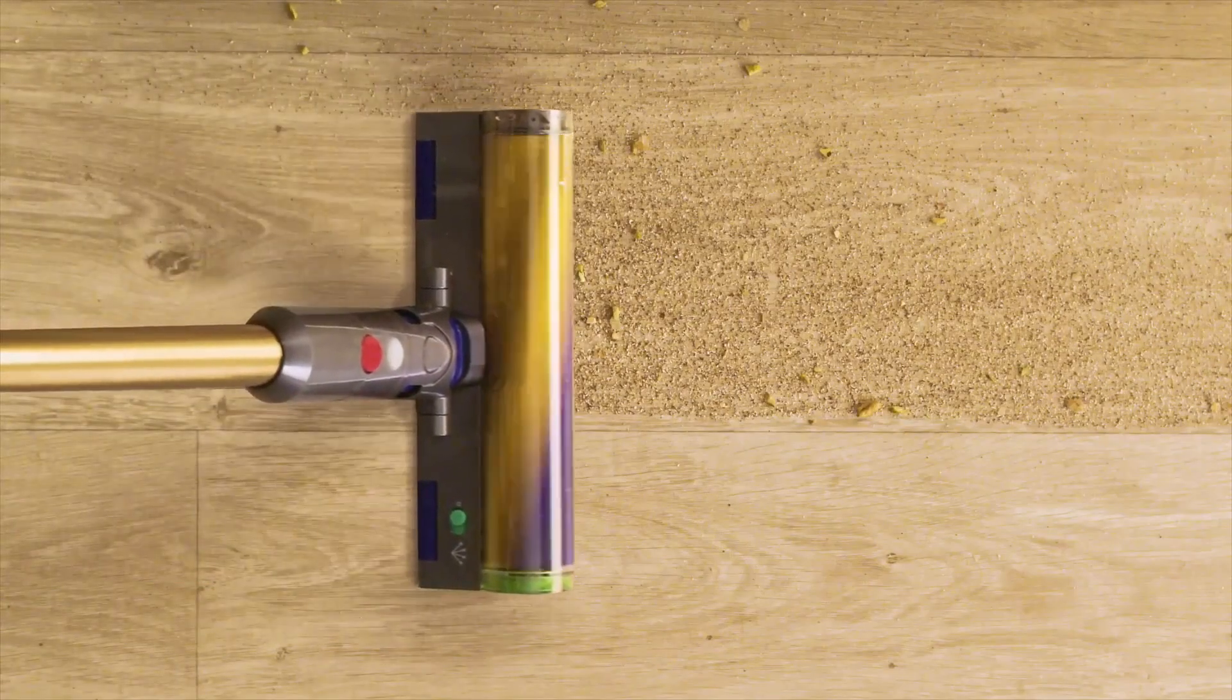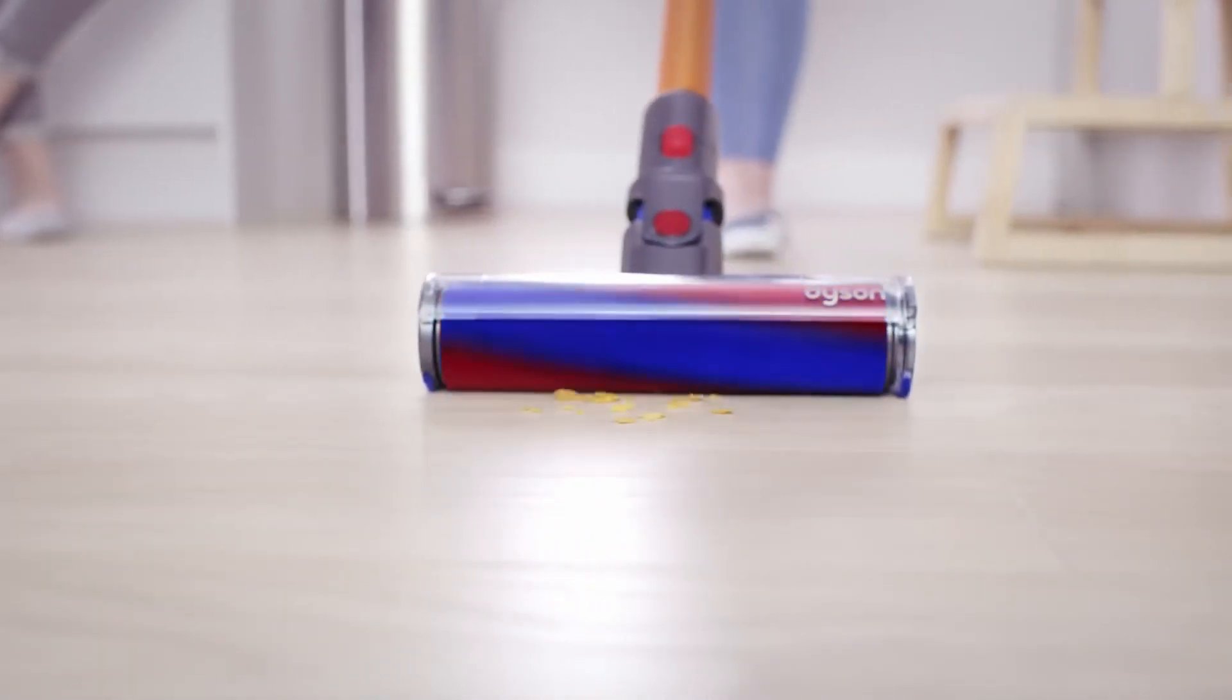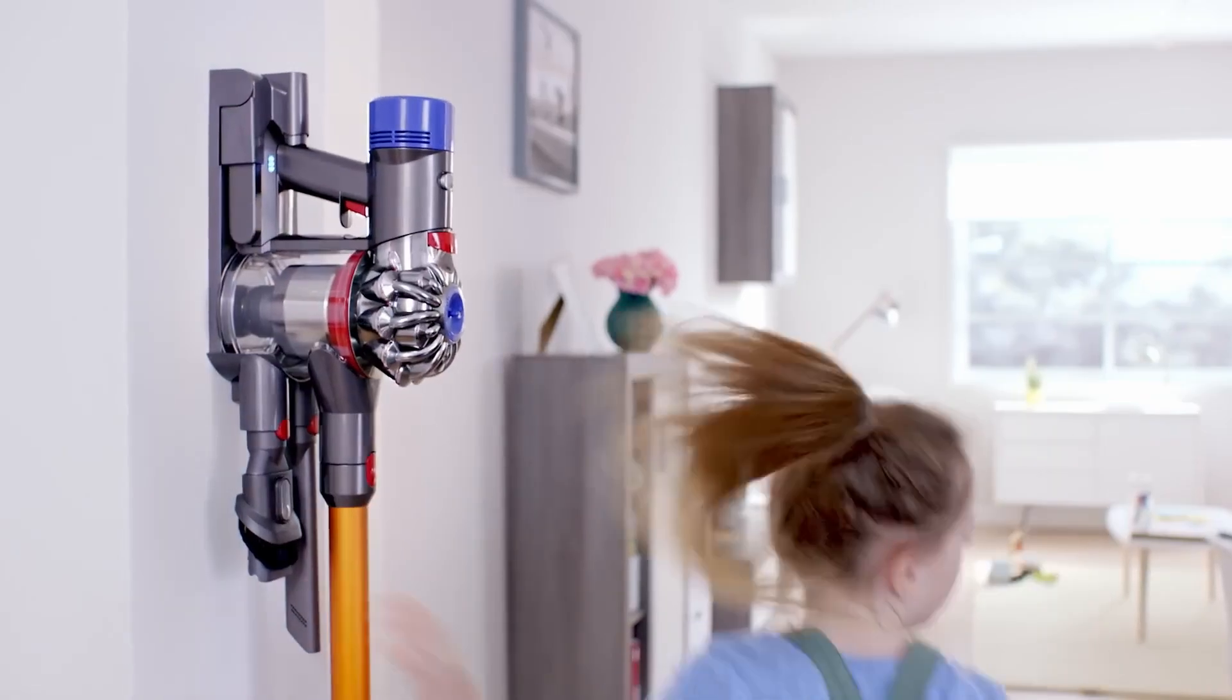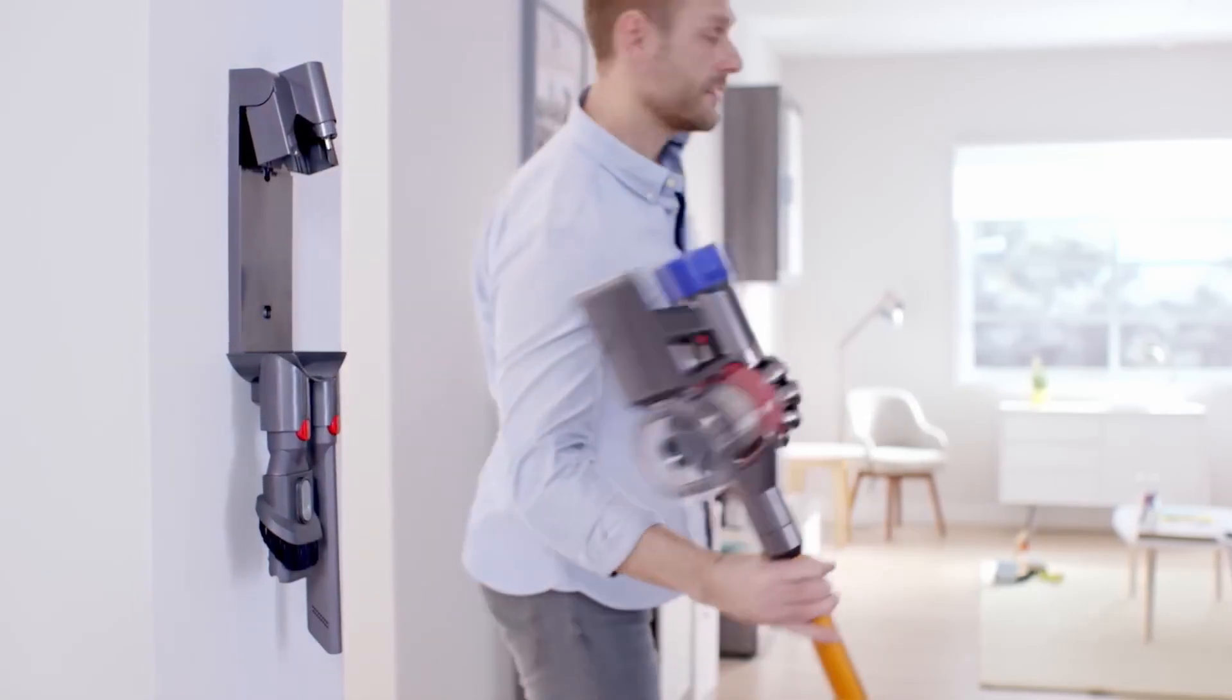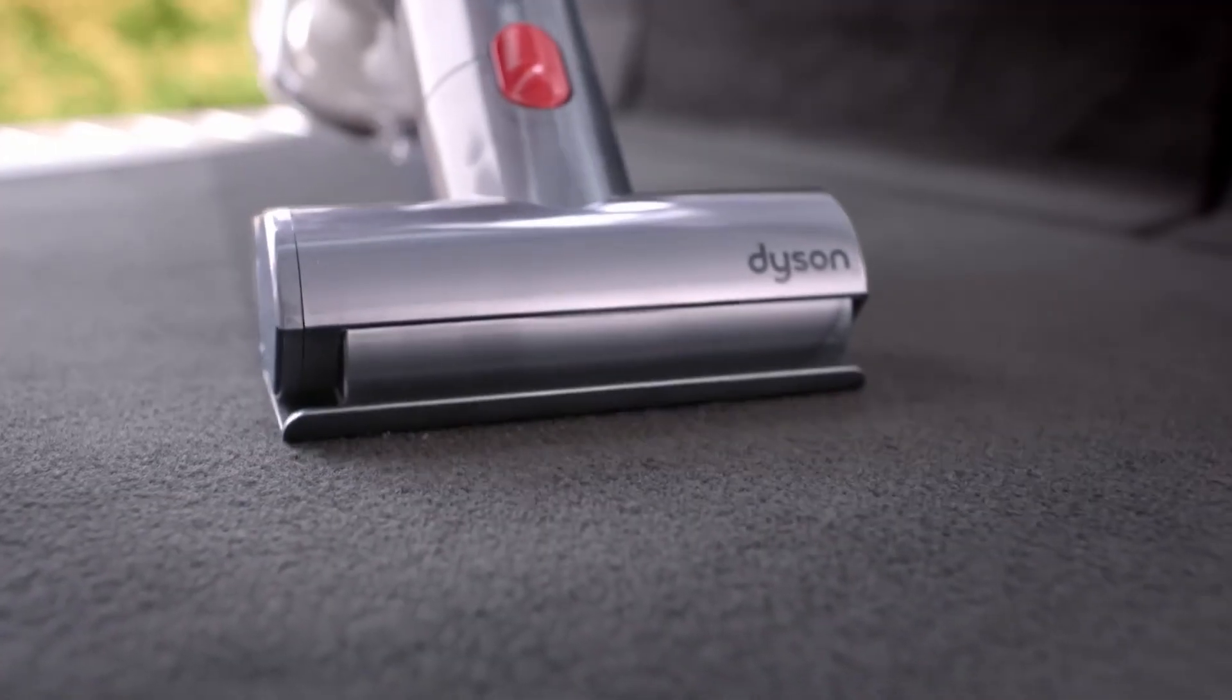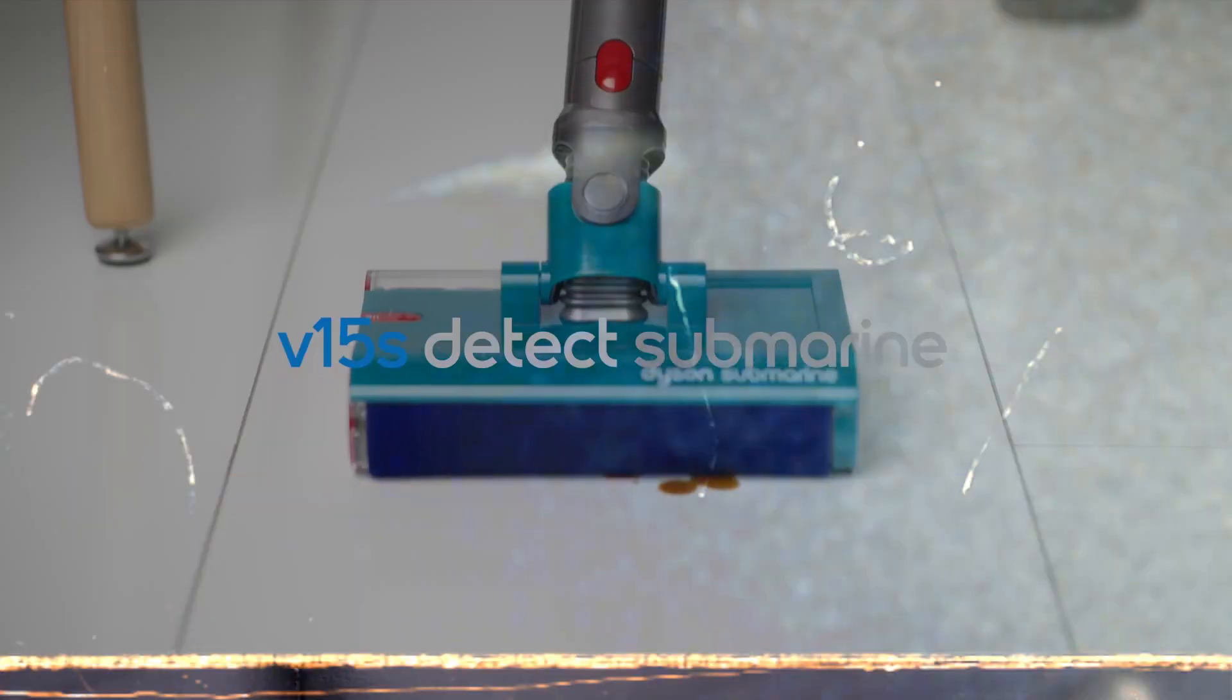These make your vacuum more versatile, making it easier to tackle specific parts of the house. If your vacuum doesn't come with an accessory you want, you can always purchase it separately. But it can be tough to discern which one does what, especially if this is your first Dyson vacuum.